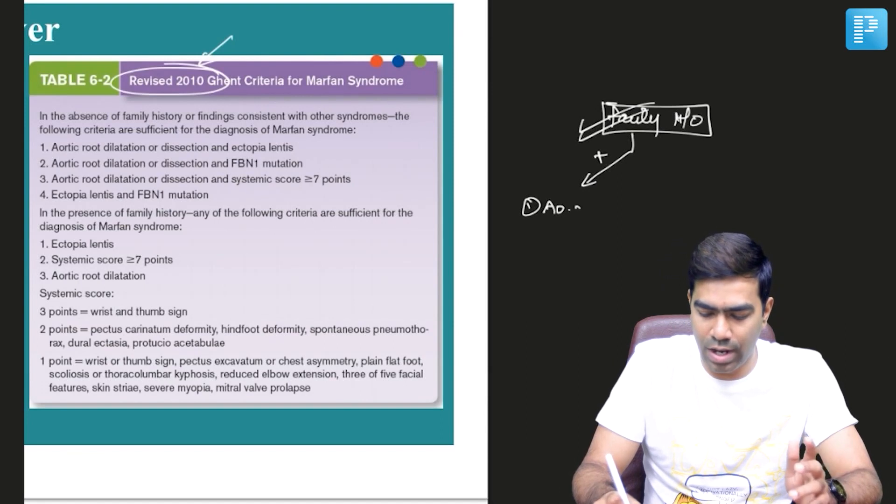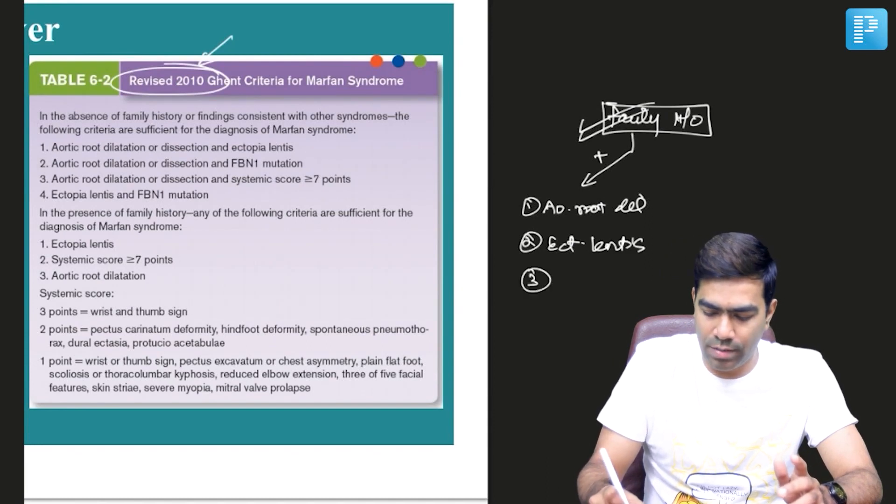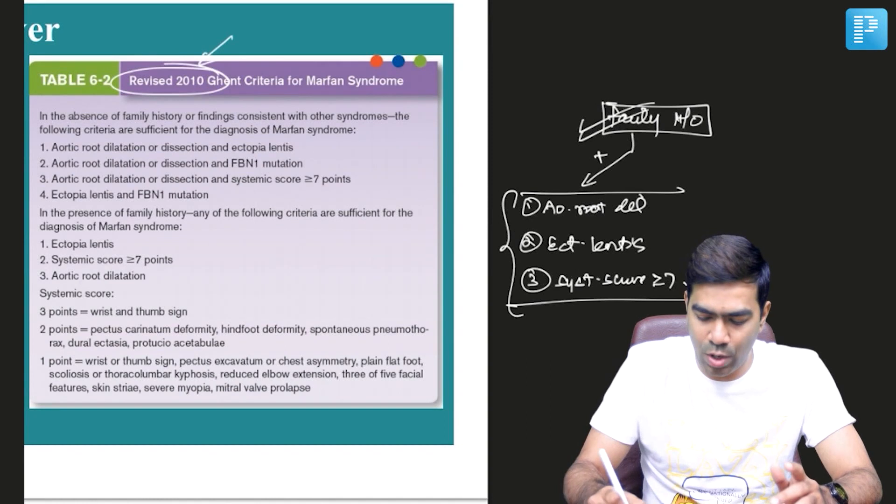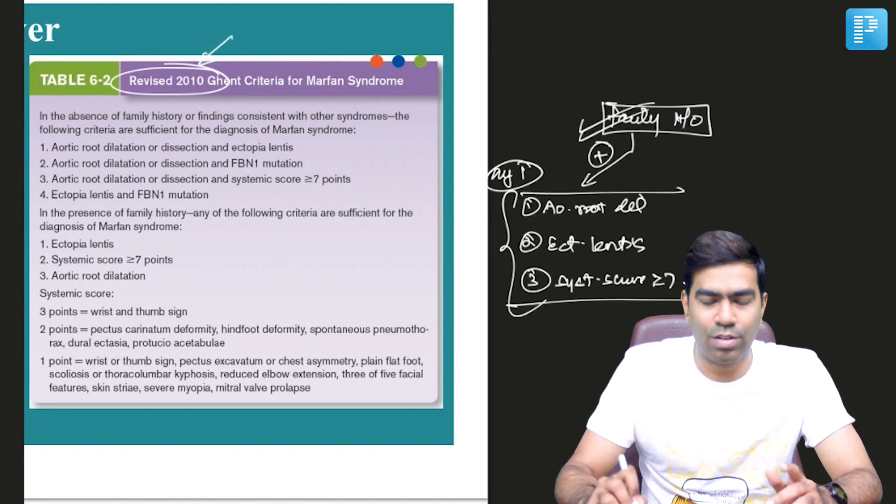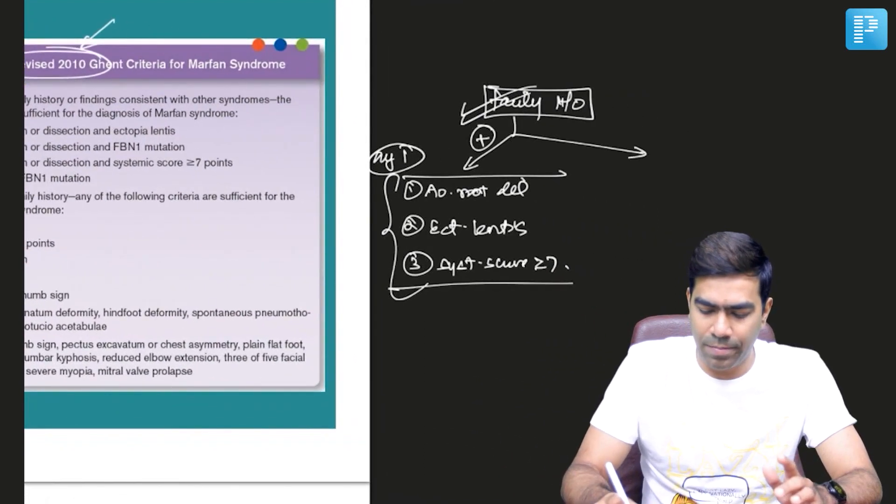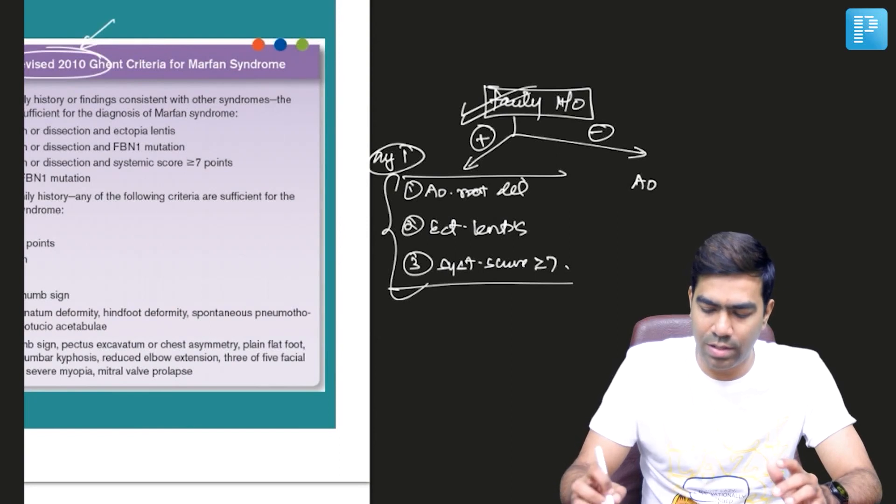If any one is present with family history, you can make the diagnosis pretty easily. If you don't have family history, then you need to demonstrate combinations of features or fibrillin-1 gene mutation in certain situations. With family history, you don't need to demonstrate the gene mutation.